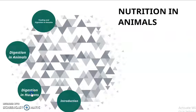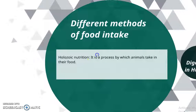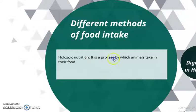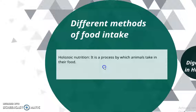Next, let's learn about digestion in animals, particularly in humans. Different methods of food intake exist. The method by which an animal takes its food is called holozoic nutrition — it is a process by which the whole food is taken into the body.